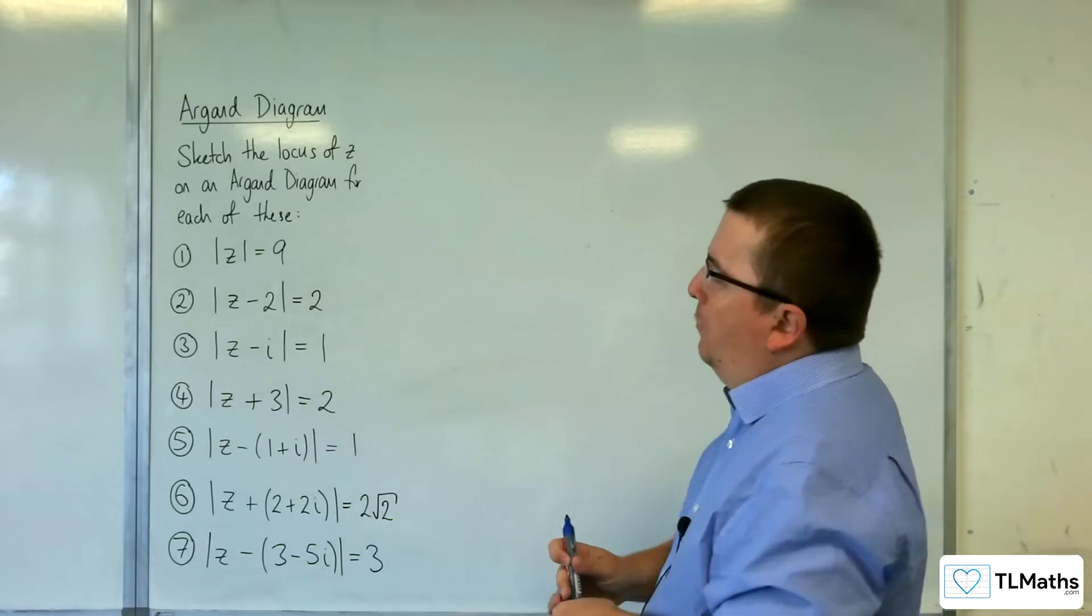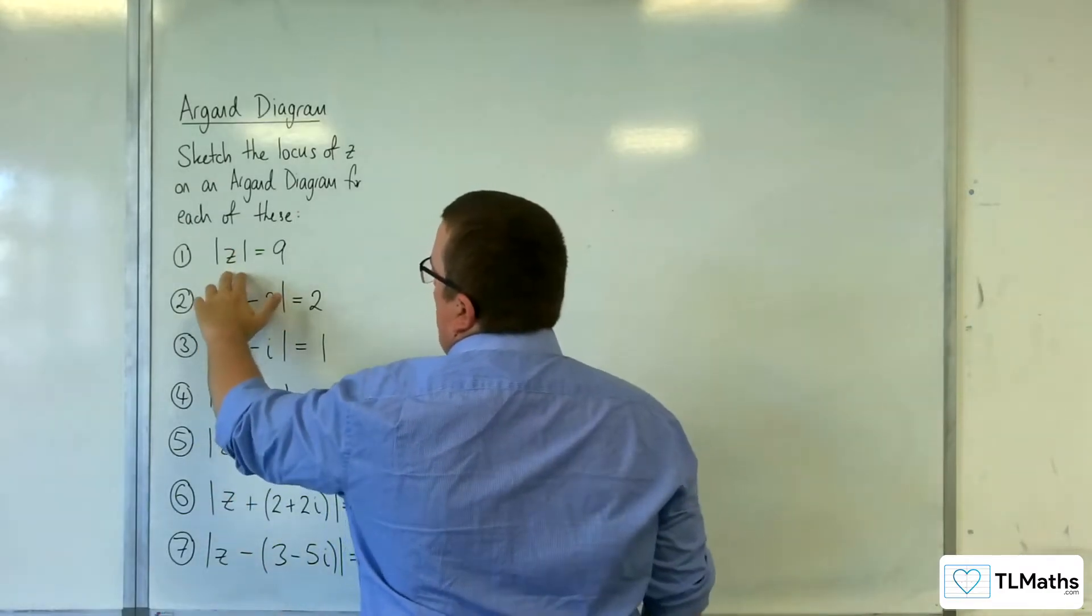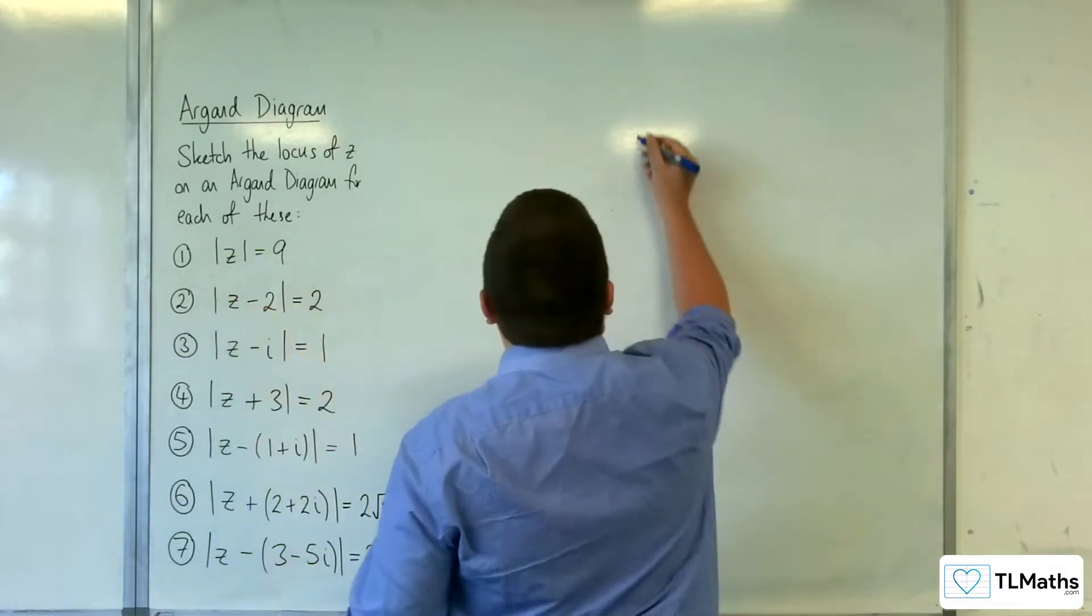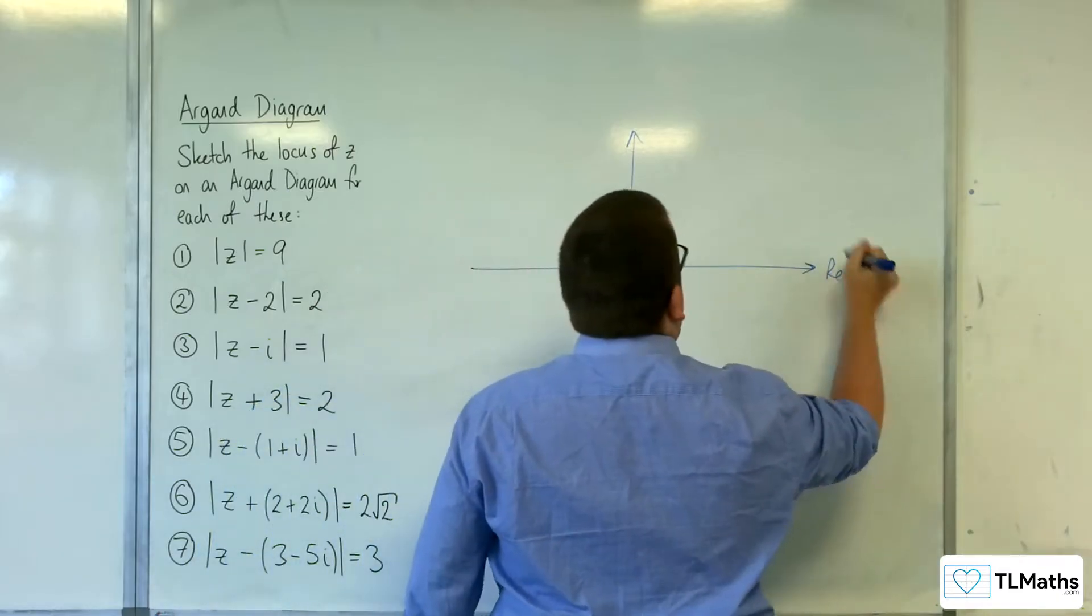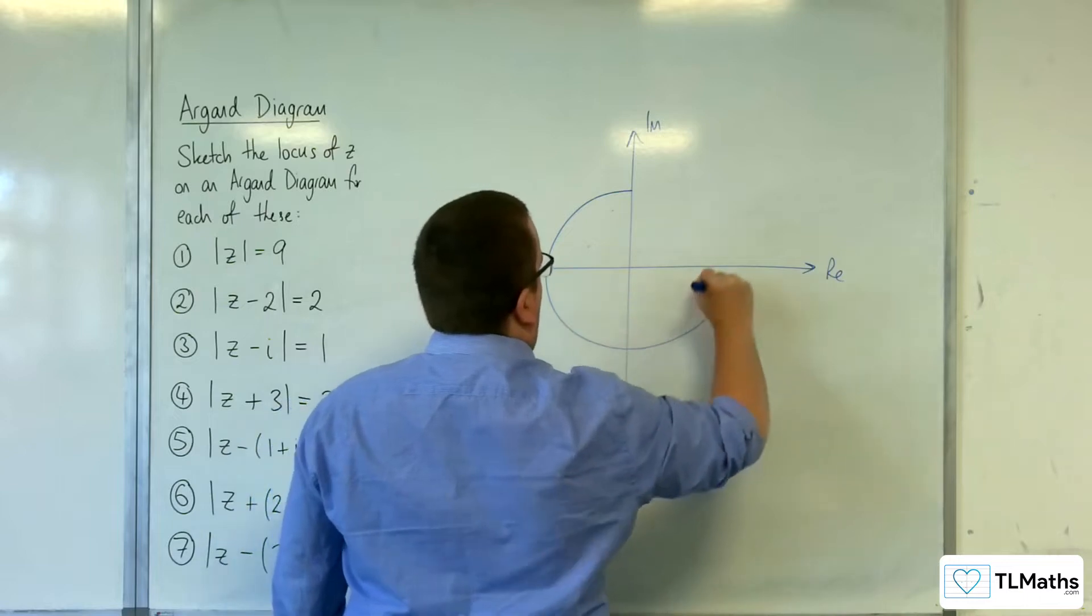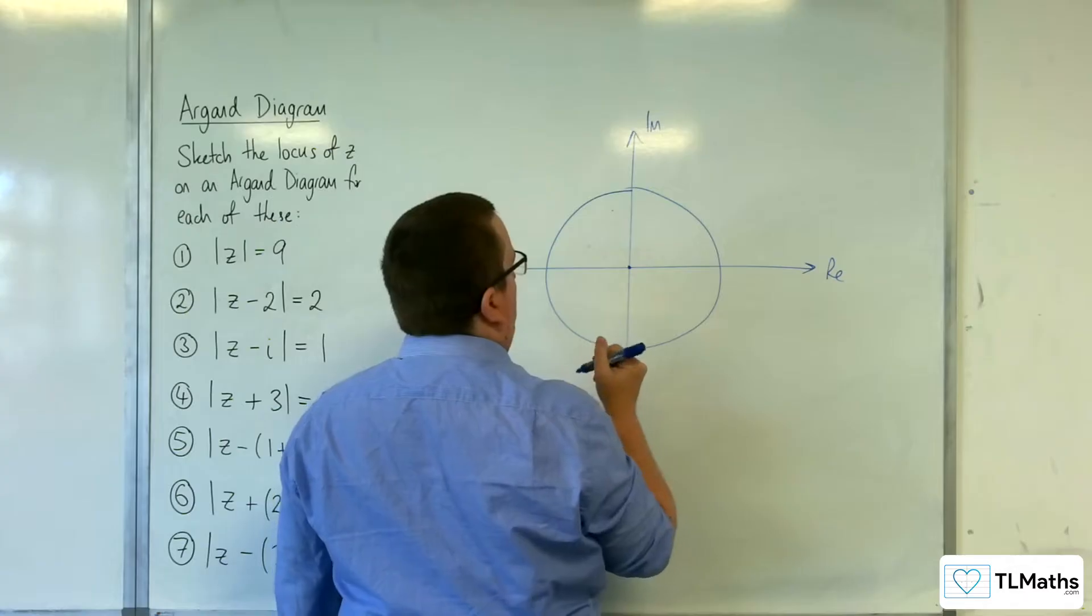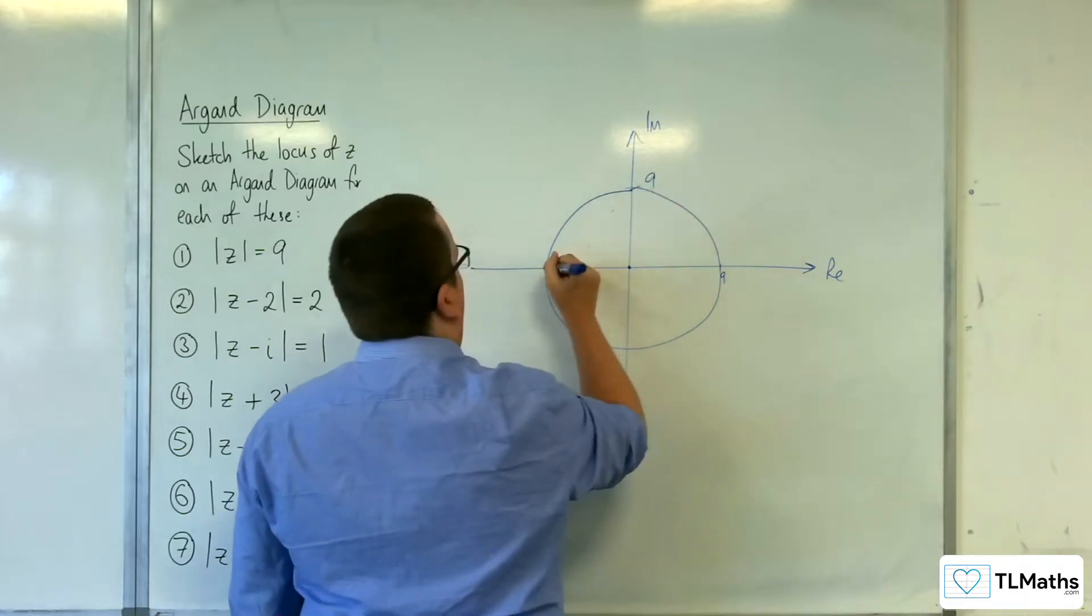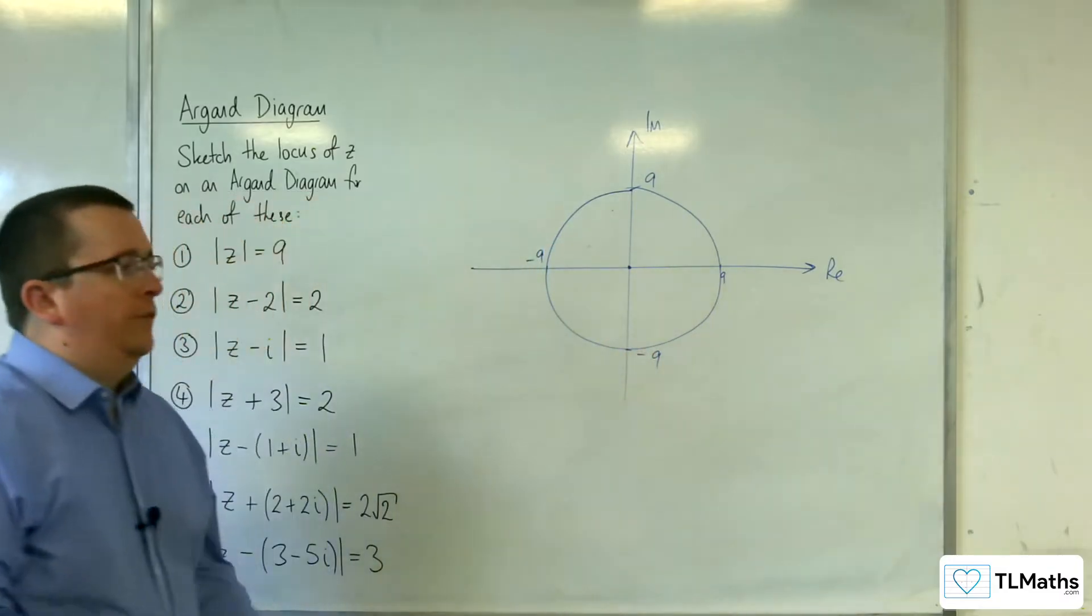Let's start off with number one. This is a circle centred at the origin, because you've just got the mod z there, and the radius is 9. Don't forget to label your real and imaginary axis. There's my circle centred at the origin with radius 9.